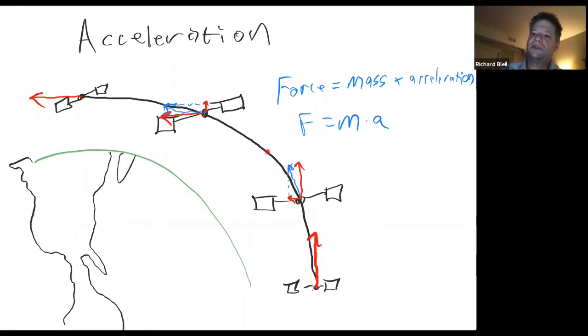As you continue to circumvent the Earth, however, you'll notice that the northern vector gets smaller and smaller and smaller, while the western vector gets larger and larger and larger until it's heading due west and it's not going north at all.